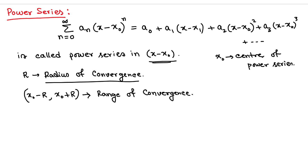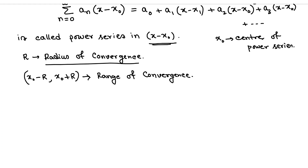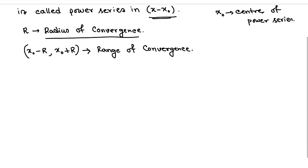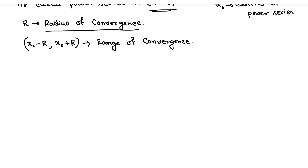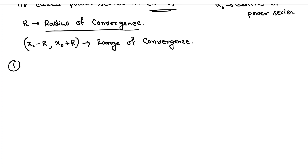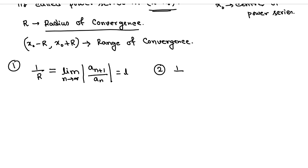Now the question is how to find the convergent or divergent property of a power series. We have two results. First: 1/R = limit as n→∞ of |a_{n+1} / a_n| = l. Second: 1/R = limit as n→∞ of |a_n|^(1/n) = l.